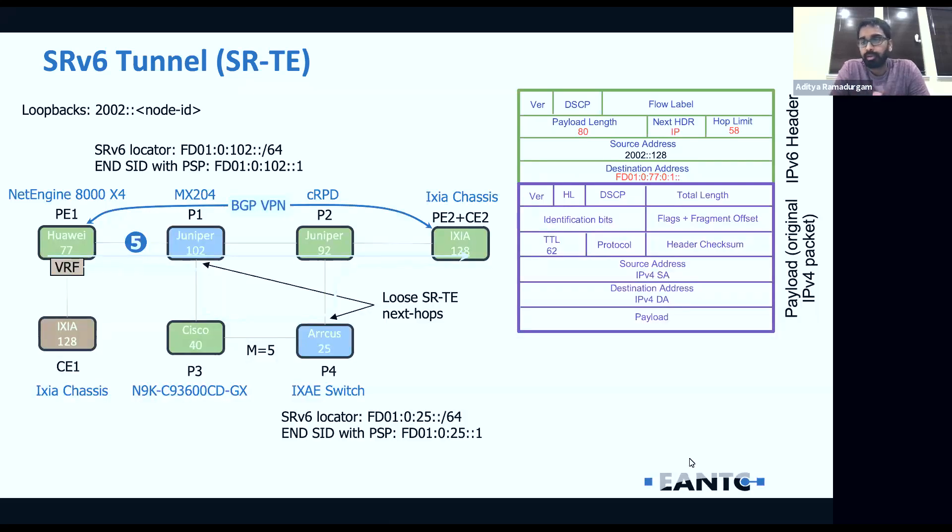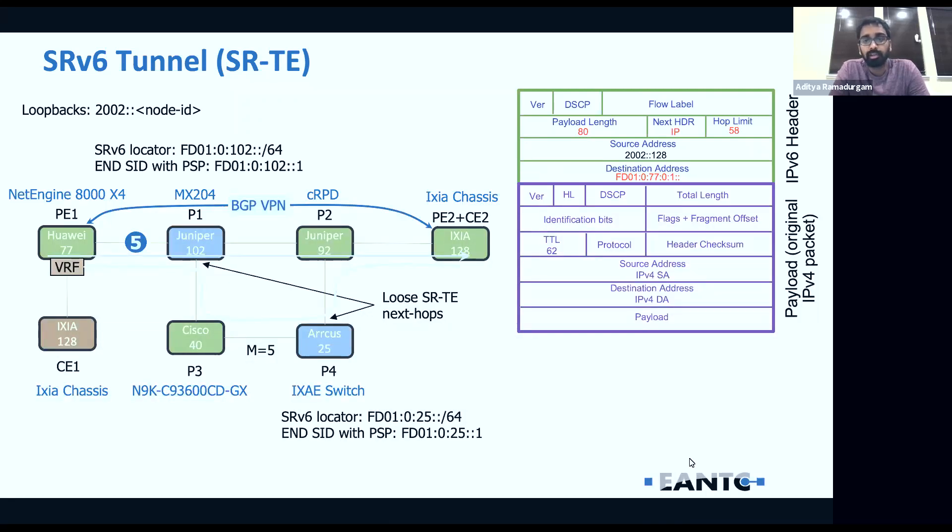When Huawei receives the packet, it's going to know that it matches the end DT4 SID on the Huawei. It's going to do a lookup in the IPv4 VRF table and then forward the packet to the CE. On a whole, as you can see, end-to-end, rather than just letting the packet go along the SPF, we have performed traffic steering using SRv6 TE and color communities.